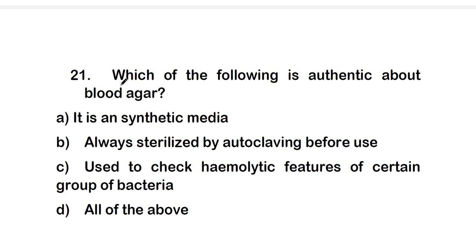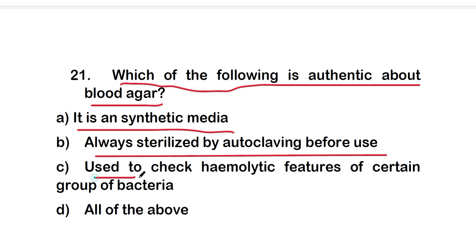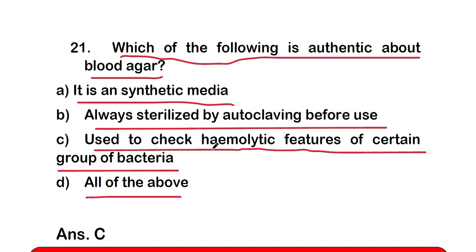The first question of part 2: which of the following is authentic about blood agar? Option A: it is a synthetic media. Option B: always sterilized by autoclaving before use. Option C: used to check hemolytic features of certain group of bacteria. Option D: all of the above. The right answer is option C.